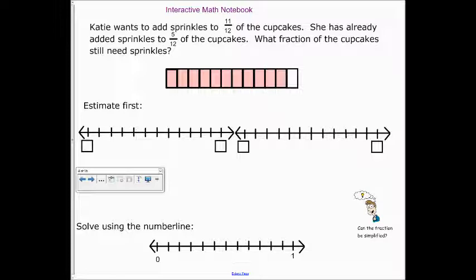So, five-twelfths. Two, three, four, five. Here's what she's already done. Okay. Then, we want to continue those sprinkles. So, seven, eight, nine, ten, eleven. Okay.